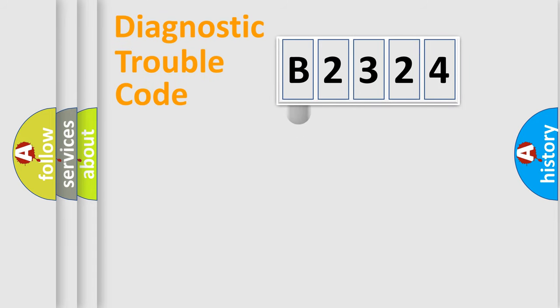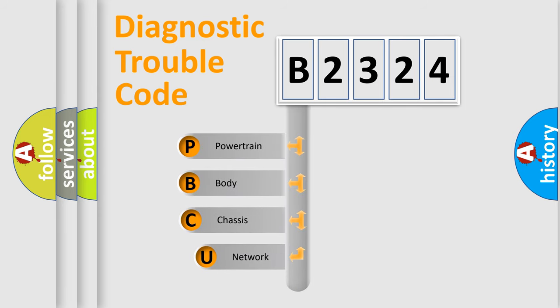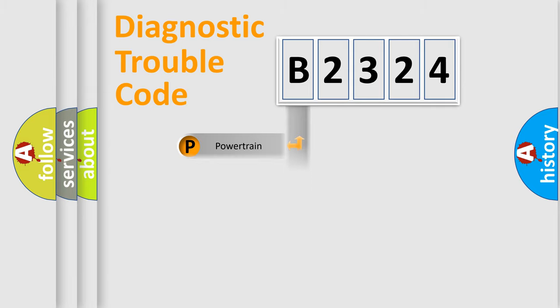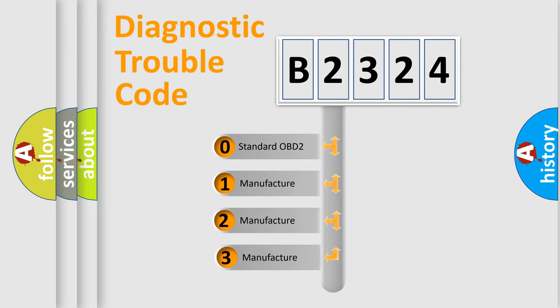Let's do this. First, let's look at the history of diagnostic fault code composition according to the OBD2 protocol, which is unified for all automakers since 2000. We divide the electric system of an automobile into four basic units: Powertrain, Body, Chassis, and Network. This distribution is defined in the first character of the code.